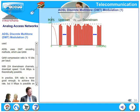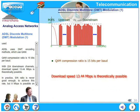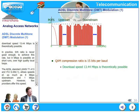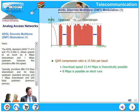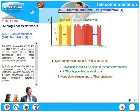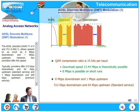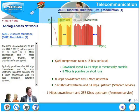ADSL uses DMT encoding methods which use QAM extensively. The QAM compression ratio is 15 bits per baud. With 224 downstream channels, download speed can theoretically be 13.44 Mbps. In practice, signal-to-noise ratio is never good enough to achieve this rate, but typically 8 Mbps is possible on short runs over high-quality local loops. The ADSL standard — ANSI T.413, ITU G.992.1 — allows speeds of up to 8 Mbps downstream and 1 Mbps upstream. However, few providers offer this. Typically, providers offer 512 Kbps downstream and 64 Kbps upstream as standard service, or 1 Mbps downstream and 256 Kbps upstream as a premium service.